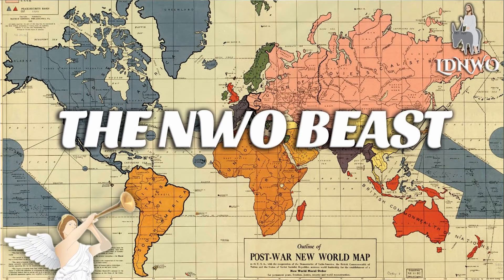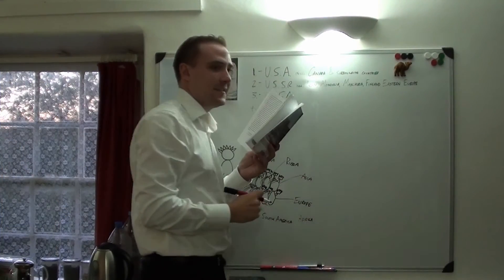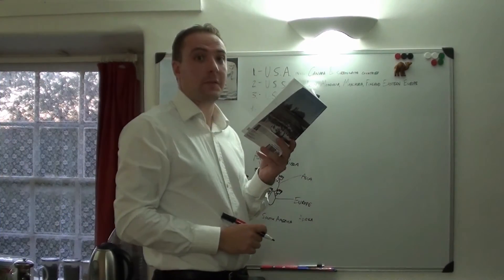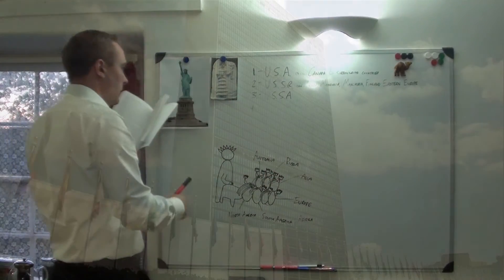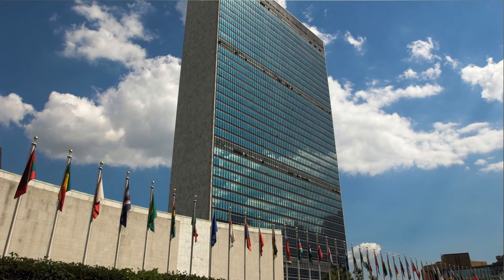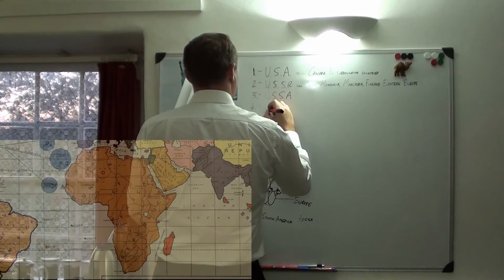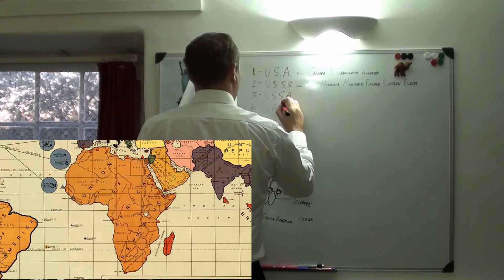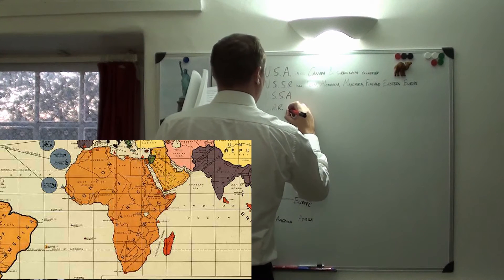Number four. And coincidentally, the headquarters of the United Nations is in, you've got it, New York. Number four, Union of African Republics, UAR, which is all of Africa.